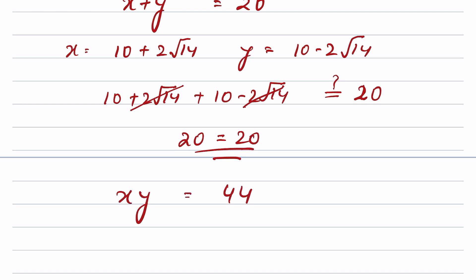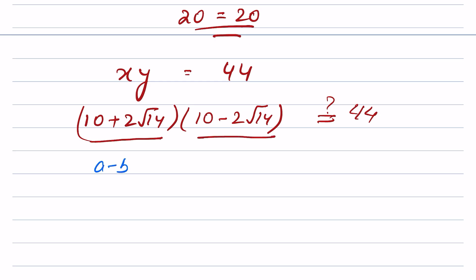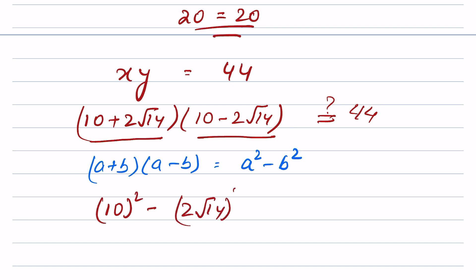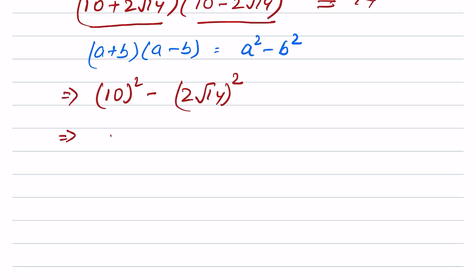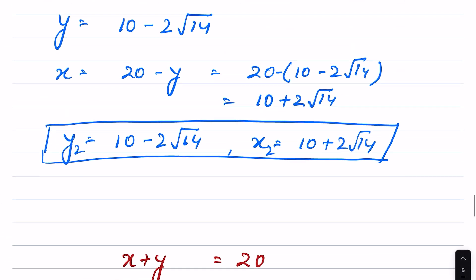Now checking x times y equals 44: (10 plus 2 root 14) times (10 minus 2 root 14). This is in the form (a plus b)(a minus b), the difference of squares, equal to a squared minus b squared. So 10 squared minus (2 root 14) squared equals 100 minus 4 times 14, which is 100 minus 56, equals 44. LHS equals RHS — therefore verified.